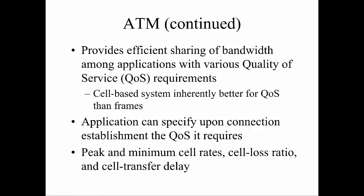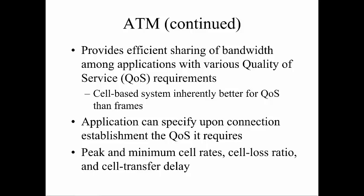ATM provides efficient sharing of bandwidth and has built-in QoS, but it's a much older, dying technology being replaced by things like Metro Ethernet. Peak and minimum cell rates, cell loss ratios, and cell transfer delays are important. With ATM, traffic is not called packets — it's called cells. You can put Ethernet over ATM, whether on the LAN or WAN, though you may require some type of converter.